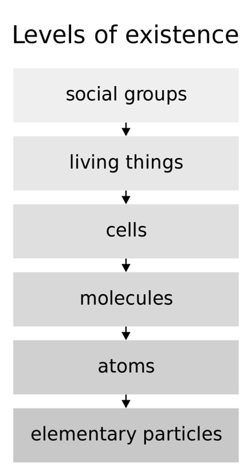Materialists claim that we observe supervenience because the neural phenomena entail the mental phenomena, while dualists deny this. The dualists' challenge is to explain supervenience without entailment.